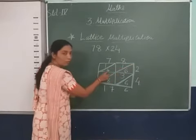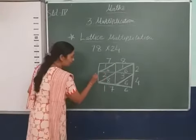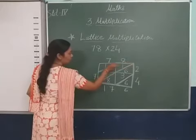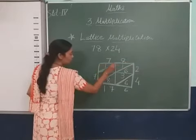1 plus 4 equals 5, 5 plus 2 equals 7. We will write here 7. Now this lattice, 1.